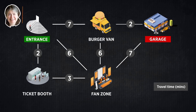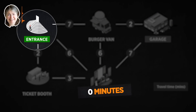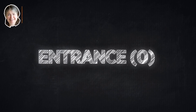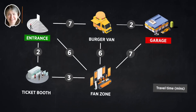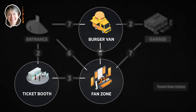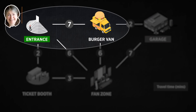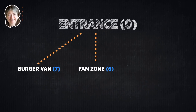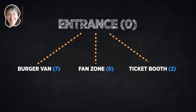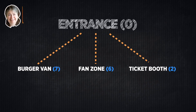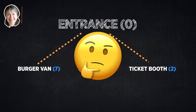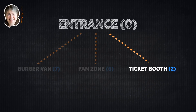We know the best path from the entrance to the entrance takes zero minutes, because you're already there — so write down 'entrance: 0'. Now look for all the places you can get to from there. From the entrance you can reach the burger van in 7 minutes, the fan zone in 6, and the ticket booths in 2. Write these down with a dotted line, because you're not yet sure they're the best paths. Now find the dotted line with the smallest distance and make it solid — in this case, the ticket booths at 2.